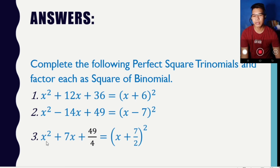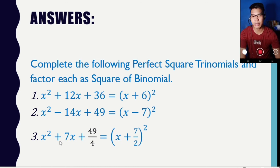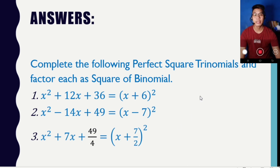We get the square root of x squared, which is x, and then the sign of the middle term plus, and then the square root of the third term — the square root of 4 over 2 — quantity squared.